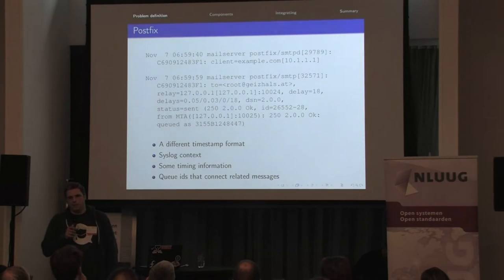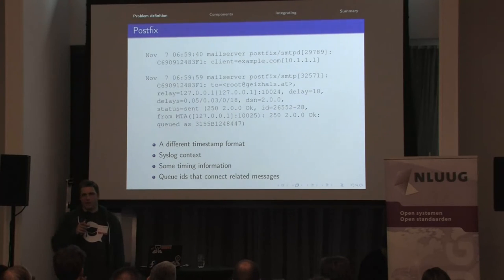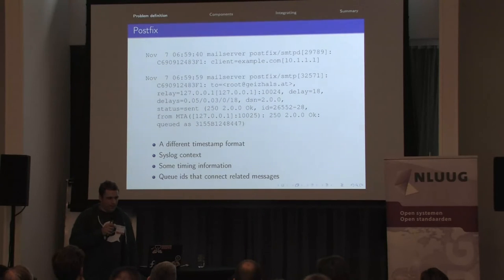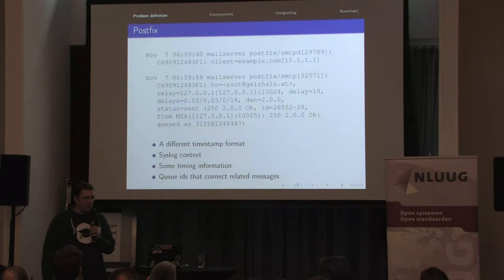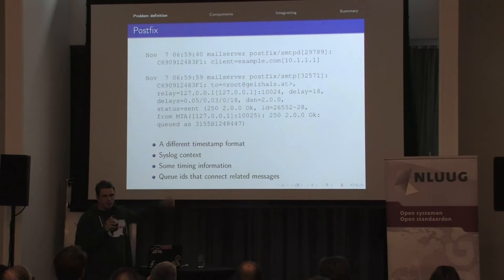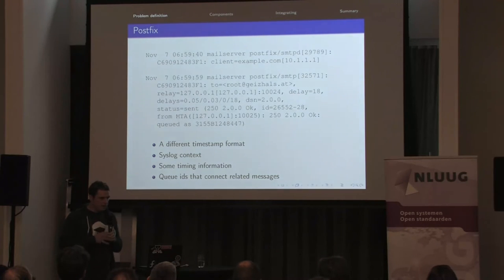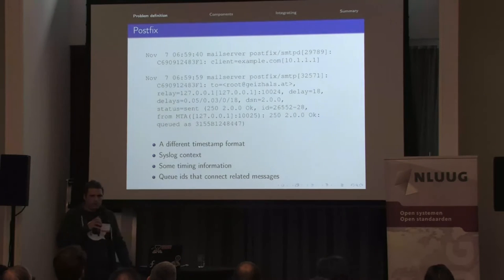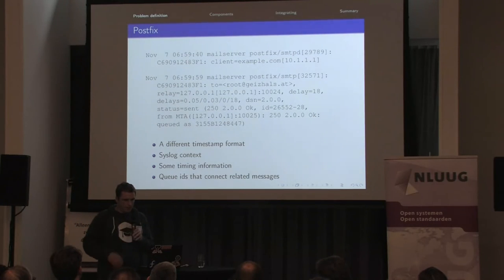These two messages are from PostFix — probably the most complex when it comes to logging, with variations depending on how you configure it. This message was written by the local syslog daemon. It has a different timestamp format, information about which process caused the message, a PID, and also a QID, which is one thing that connects the two messages on screen. You can also see delays that contain three numbers — those numbers are actually metrics, so there's a mixture of information here.